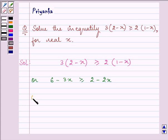On subtracting 6 from both the sides we have, 6 minus 3x minus 6 is greater than or equal to 2 minus 2x minus 6.